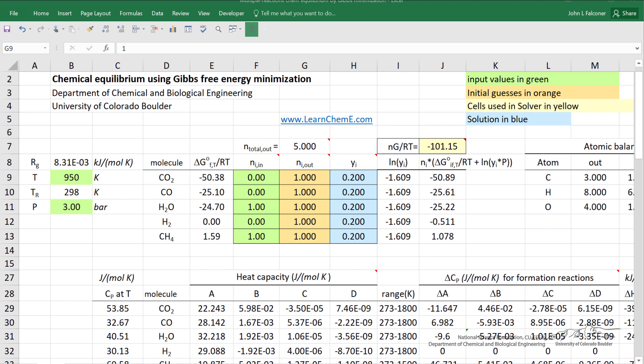We use these mole fractions as well as the number of moles in calculating the Gibbs free energy, the total Gibbs free energy for the mixture as the sum of the partial molar Gibbs free energy. This value, minus 101.15, is what we're going to minimize using Solver.